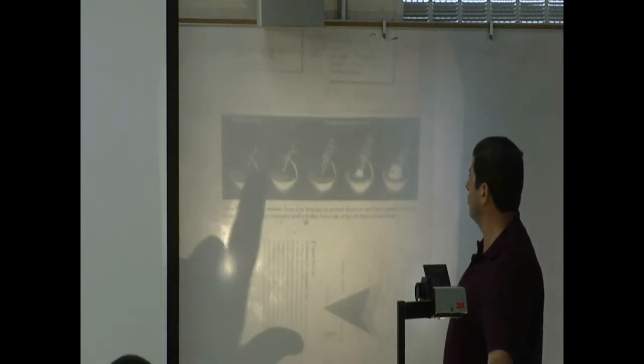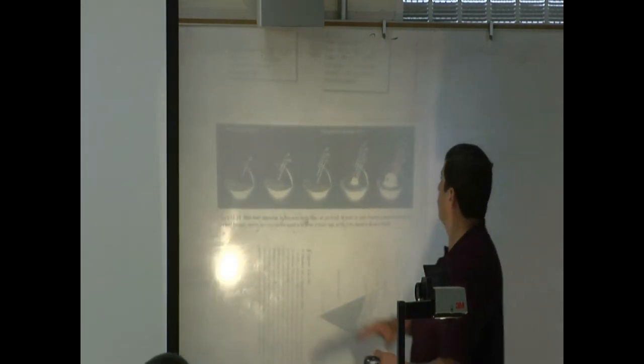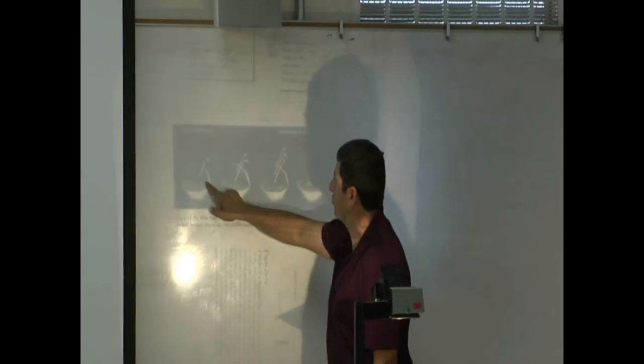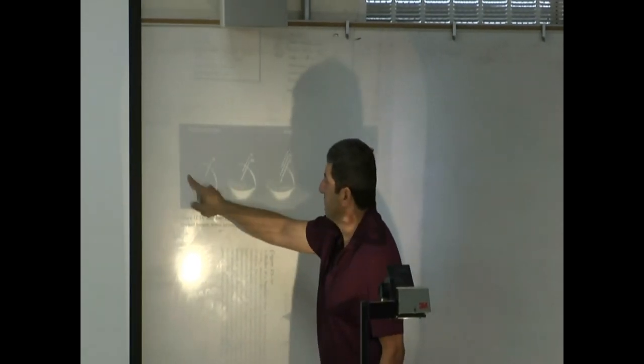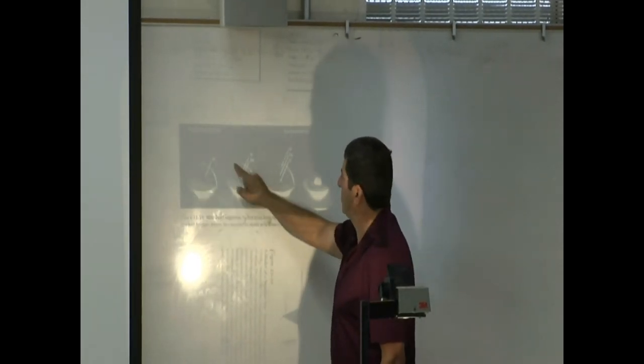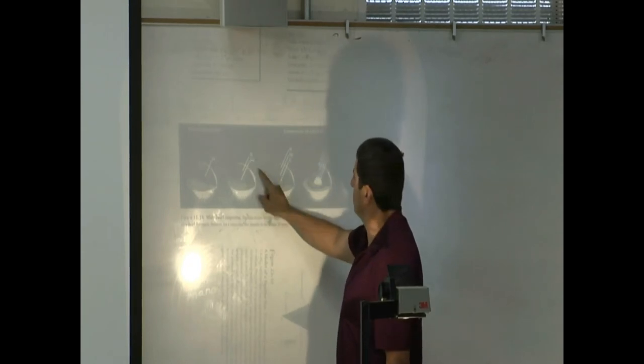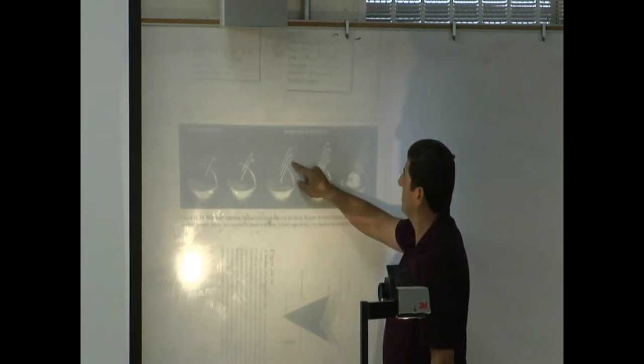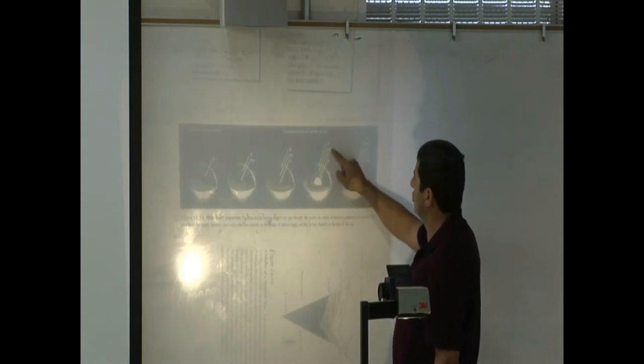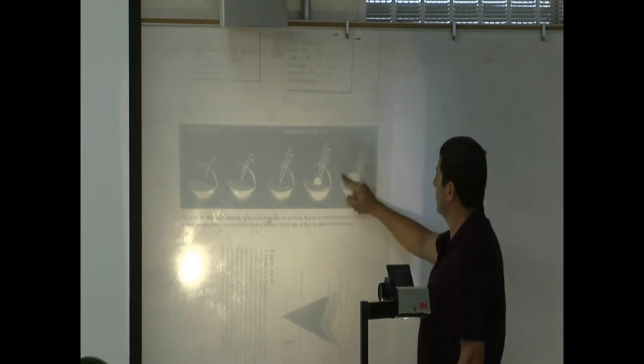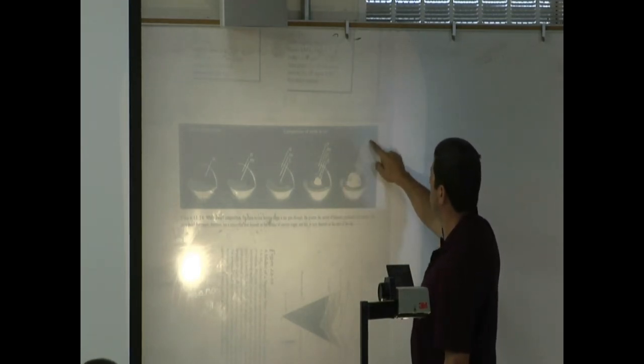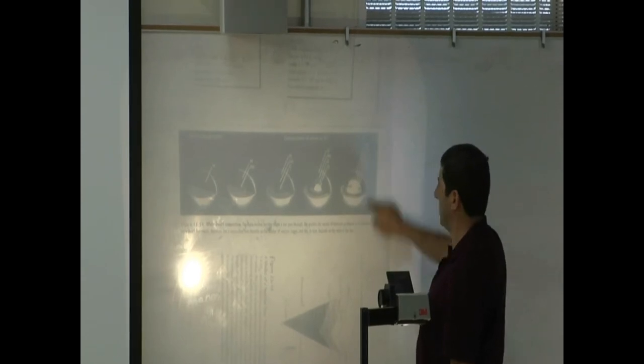This one shows you the inside of a typical white dwarf, composition of a white dwarf. It could be a simple white dwarf with hydrogen and helium. It could be more complex: hydrogen, helium, carbon, oxygen, or even hydrogen, helium, carbon, oxygen, neon.